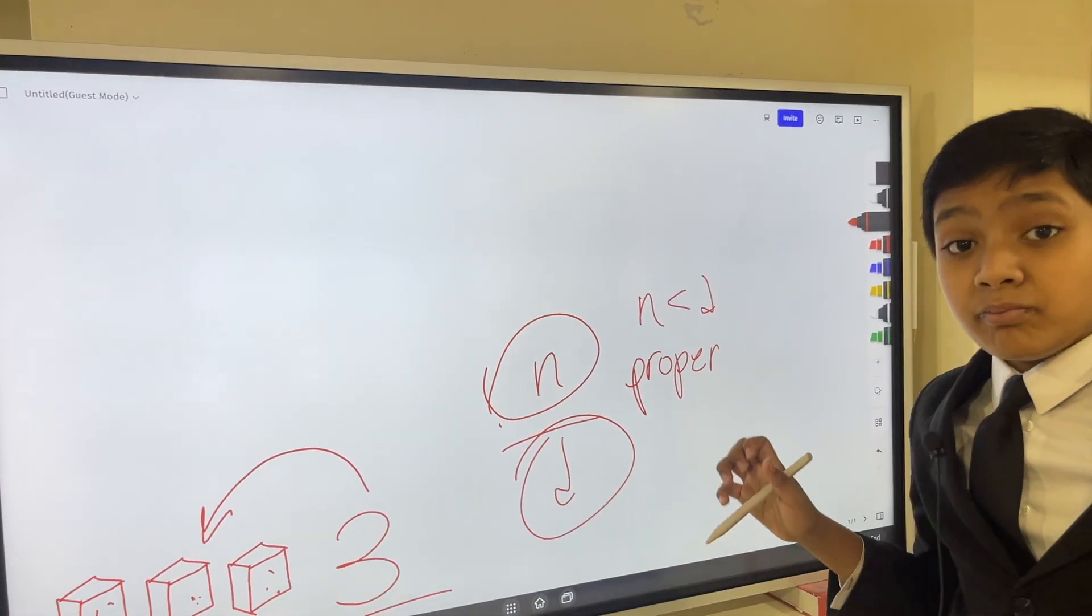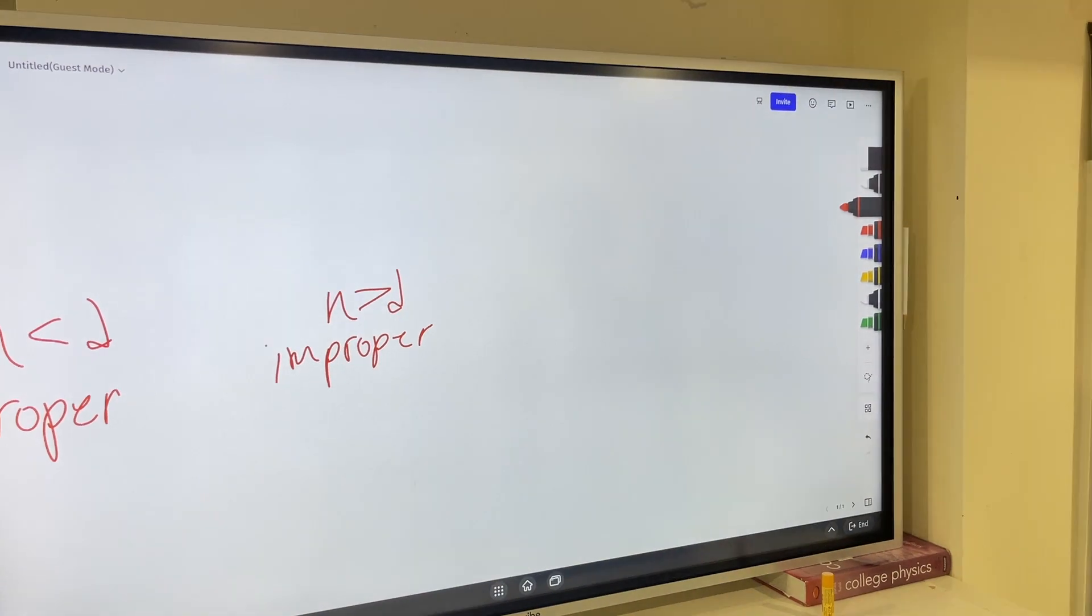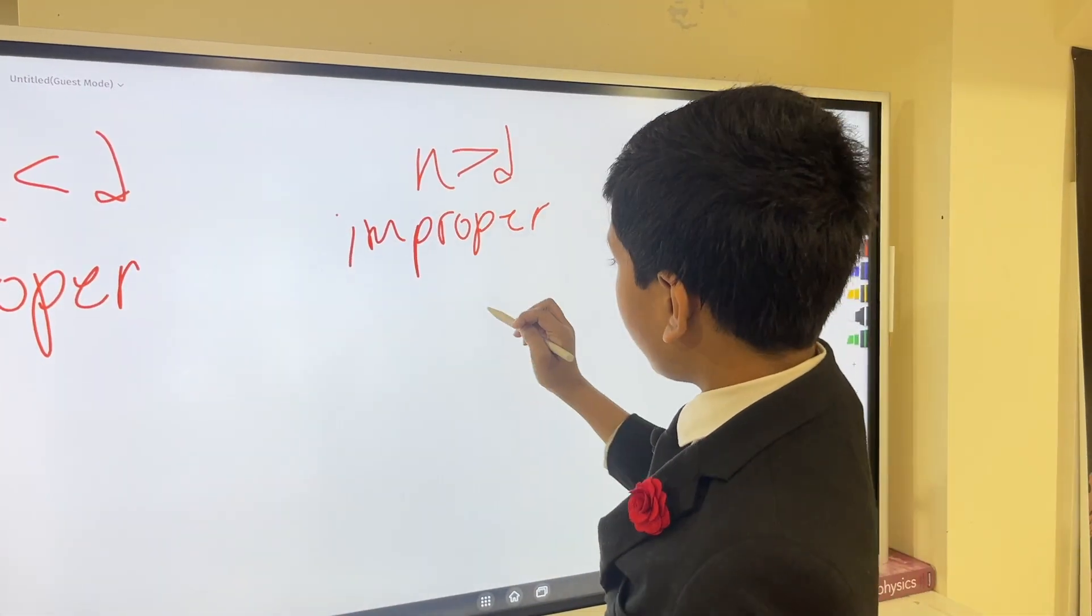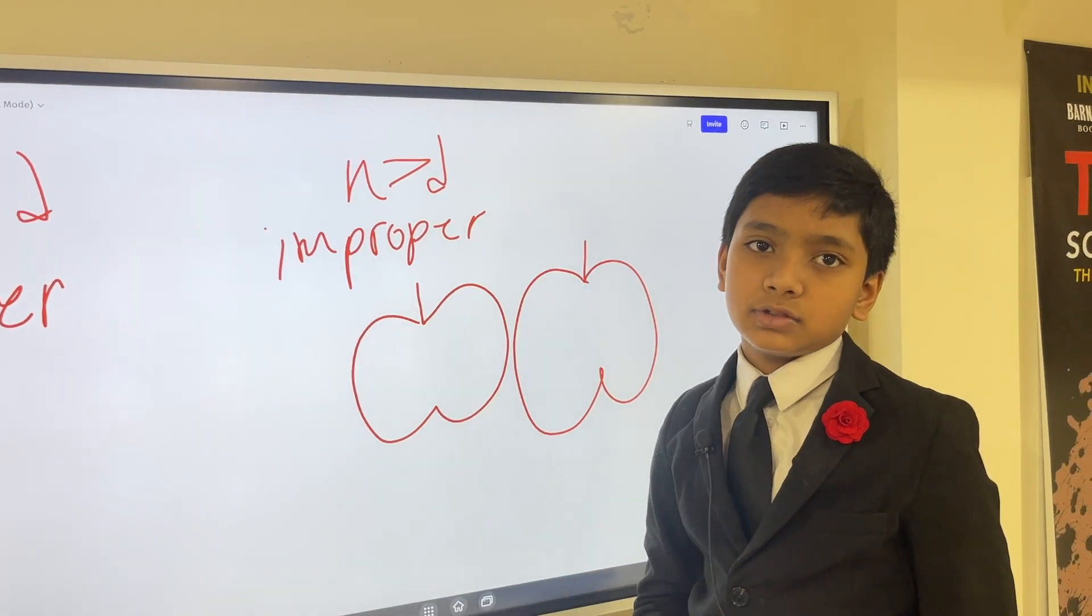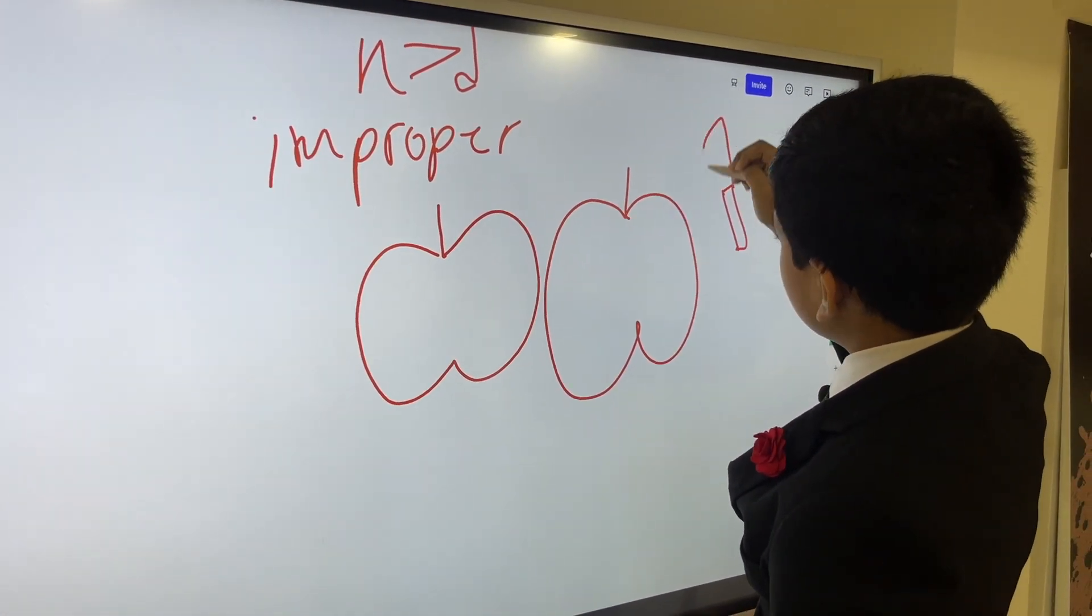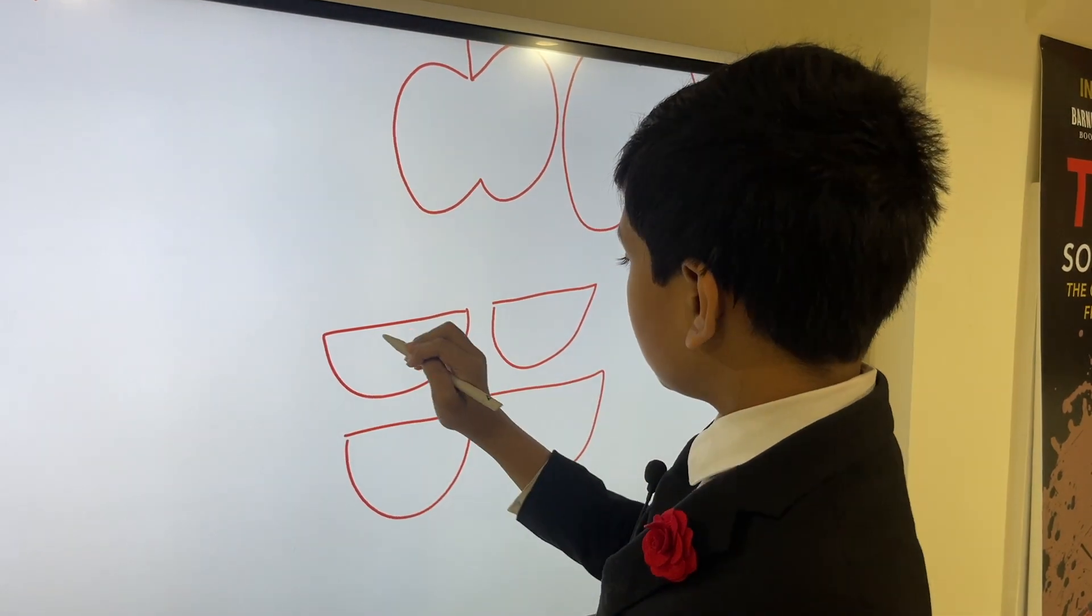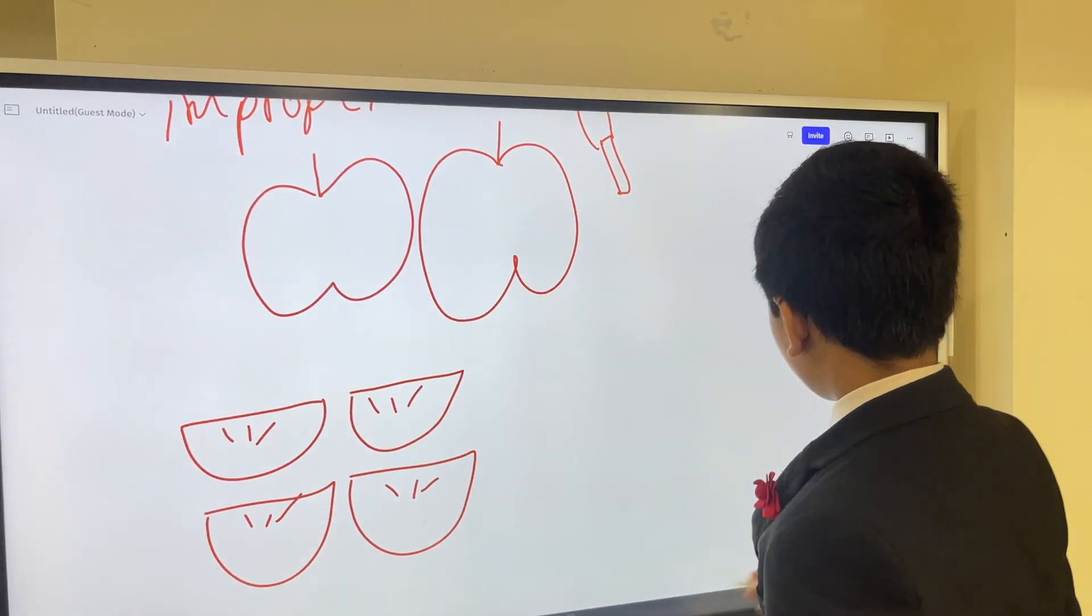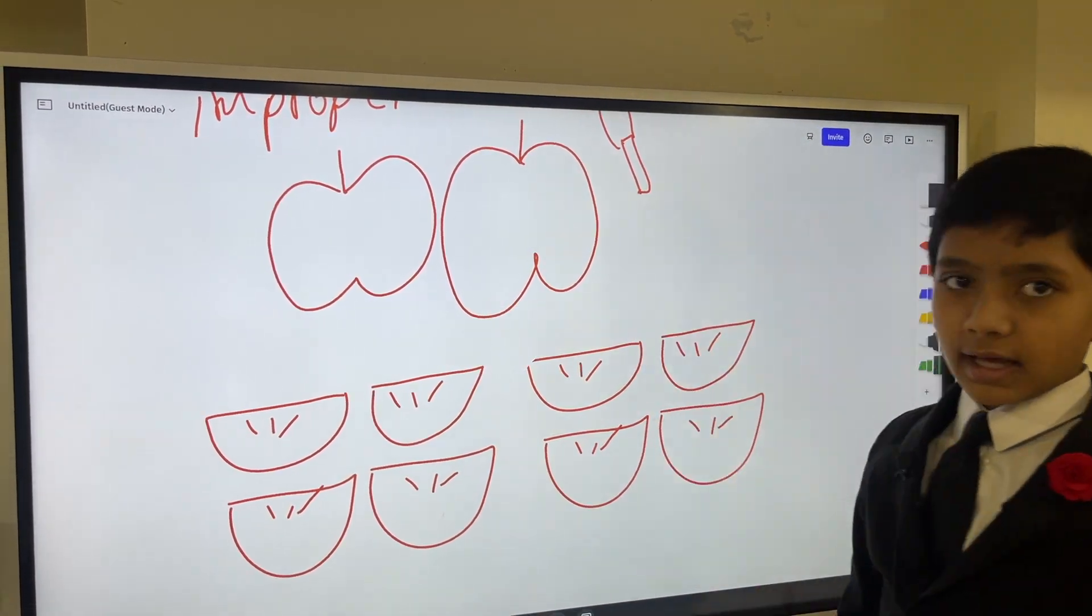But we can also have improper fractions, where the numerator is greater than the denominator. An improper fraction might not make as much sense to you. But, oh, I got it. Let's say you have two apples, right? Now, I know these are not the best apples in the history of apples, but whatever. So now, let's say you slice them up. So, slicing them up, you get four slices from the first apple. Yeah, I know those aren't the best seeds, but... And you get four slices from the second apple. Now, let's pretend that the second apple looks exactly like the first apple, because they have the same slices.